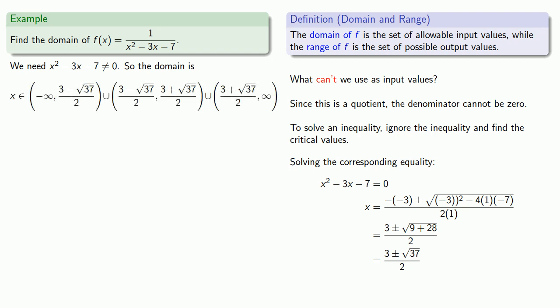So we might put it in a different form. As long as x is not equal to 3 plus or minus square root of 37 over 2, the denominator isn't zero. So our domain: x not equal to 3 plus or minus root 37 over 2.